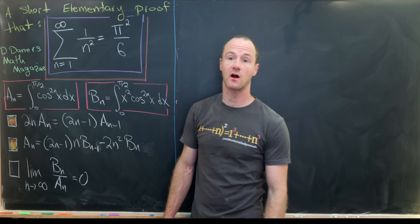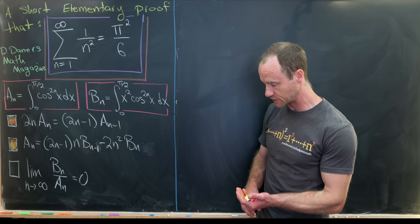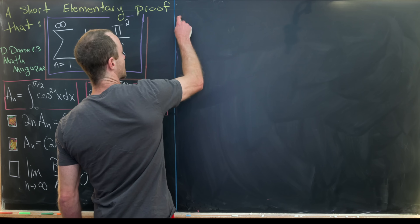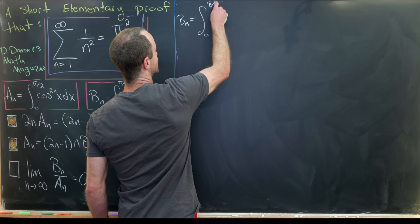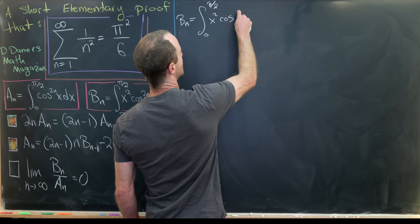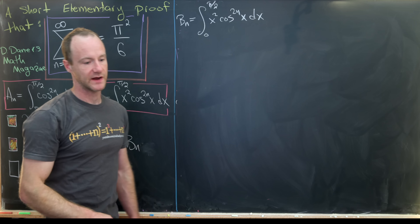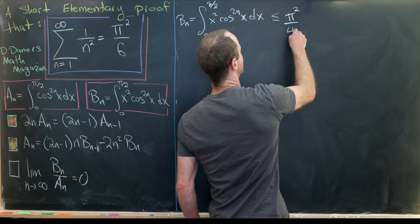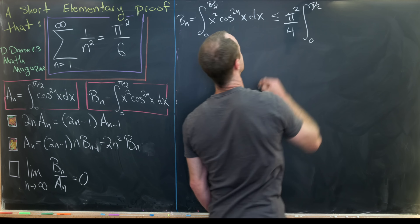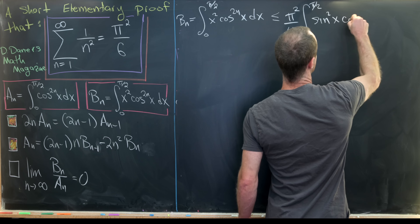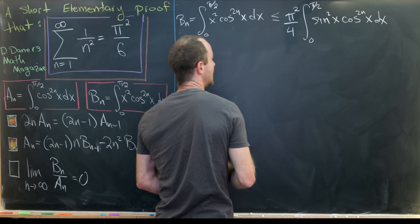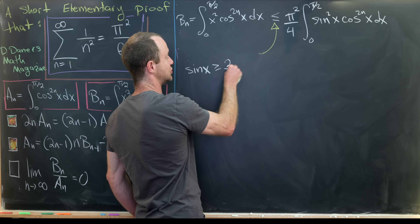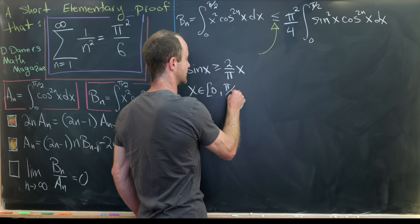For our final tool, we calculate the limit as n → ∞ of b_n/a_n, showing it equals 0. Starting with the definition b_n = ∫₀^{π/2} x²·cosine^{2n}(x) dx, we apply an inequality: this is less than or equal to (π²/4) times ∫₀^{π/2} sine²(x)·cosine^{2n}(x) dx. This inequality follows because sine(x) ≥ (2/π)·x for x on [0, π/2].